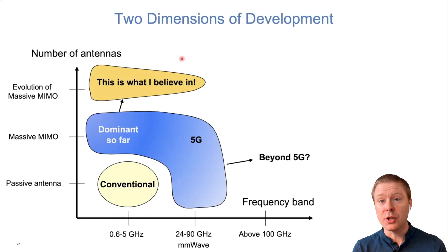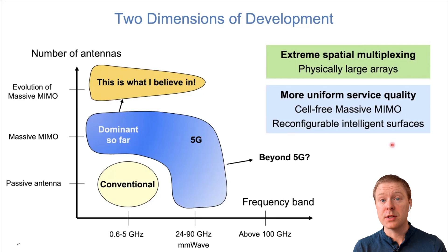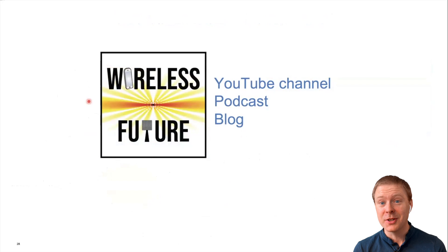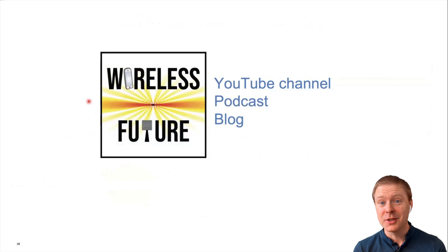To sum up, mobile broadband beyond 5G can be evolved along two dimensions: the number of antennas and the frequency spectrum used. Conventional networks use 600 MHz to about 5 GHz; 5G adds millimeter-wave higher bands for more bandwidth, but I believe having more antennas in existing frequency bands is more impactful since we can multiplex more users spatially without needing new spectrum. Cell-free networks enable extreme spatial multiplexing and more uniform service quality; reconfigurable intelligent surfaces improve coverage holes. If you want to hear more, I have a YouTube channel with 13,000 subscribers, a podcast, and a blog — all called 'Wireless Future' — plus a white paper on broadband connectivity and 6G available for download.